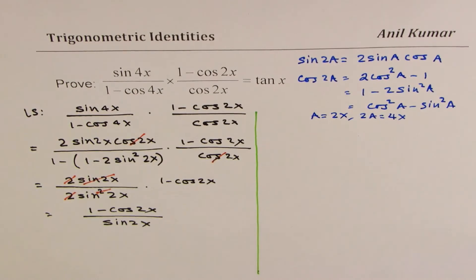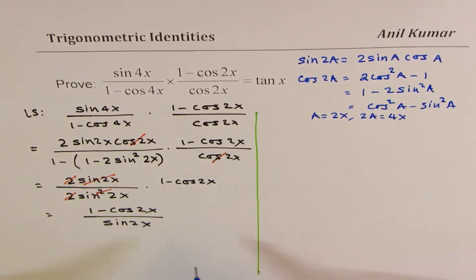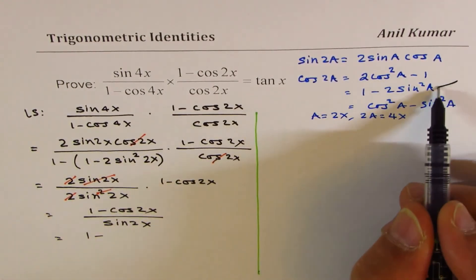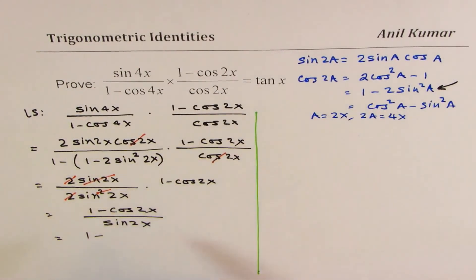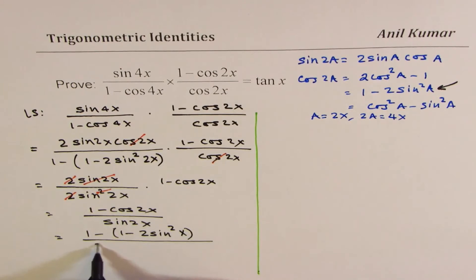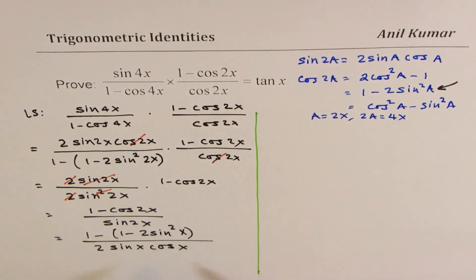Now, since I need sine on the top, cos in the denominator, what I will do here is, I will use sine 2x, I will use sine 2x formula with 1 minus 2 sine square x. So I can write this as 1 minus 2 sine square x divided by sine 2x is 2 sine x cos x. Clear?